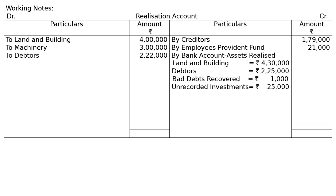Next, machinery: Vichal took over machinery at Rs. 2 lakh 80,000. Hence machinery Rs. 2 lakh 80,000. The total realization comes to Rs. 9 lakh 61,000. This will form one entry: bank account debited to realization Rs. 9 lakh 61,000.